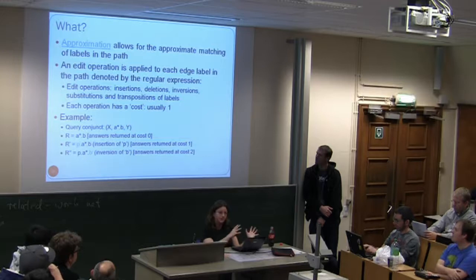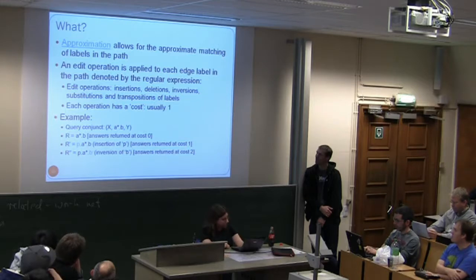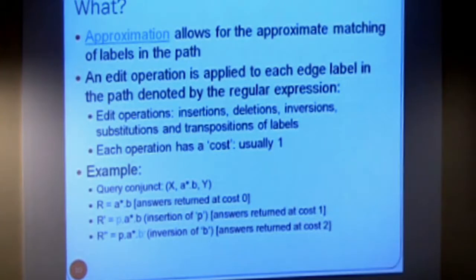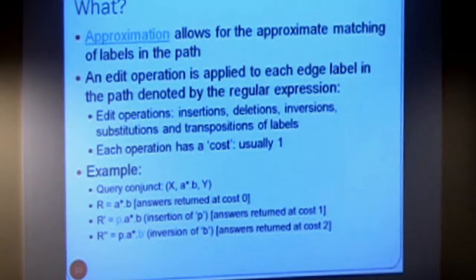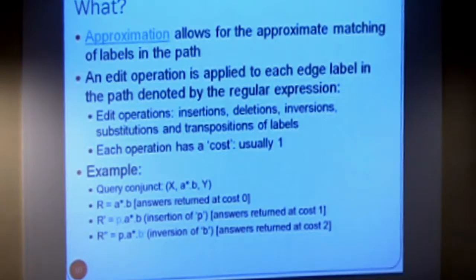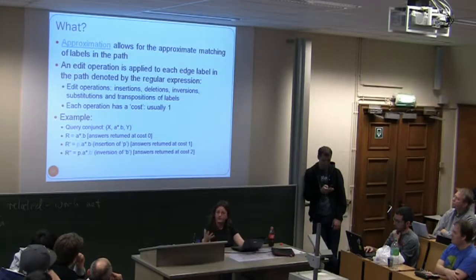Back to the two operators. The approximation operator allows approximate matching of labels in the path. An edit operation is applied to each label in the path denoted by the regular expression. The allowed operations are: insertions of extra edges, deletion of edges, inversion of edges (if you have label A from X to Y, also allow a reverse label from Y to X), substitutions (one label substituted by another), and transpositions (swapping labels on two adjacent edges). Each operation is assigned a cost, usually one but configurable.